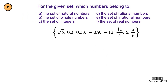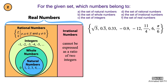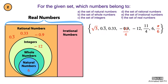Let's go back to our Venn diagram for the set and subsets of real numbers and place the numbers from our given set where they belong. 6 is a counting or natural number. Negative 12 is an integer. 0.3 repeating is a rational number — it is the ratio of 1 and 3. 0.33 is also rational, as well as negative 0.9 and 11 over 4. Square root of 5 and pi over 6 are irrational numbers.